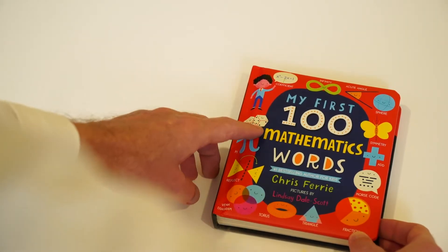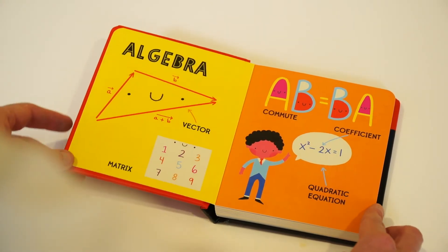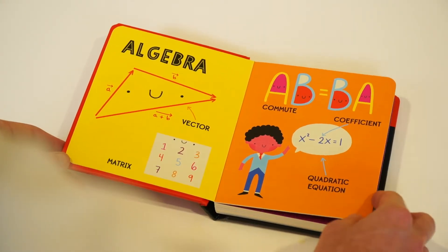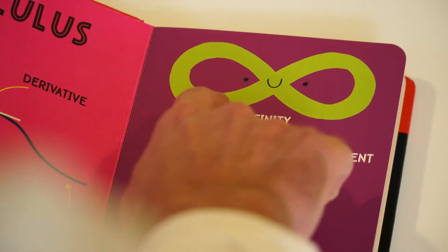In my first 100 math words, we cover all the branches of Mathematics: Algebra, Calculus, including Infinity,